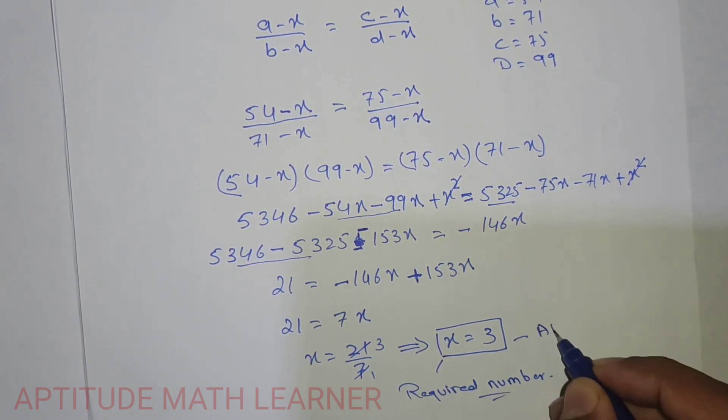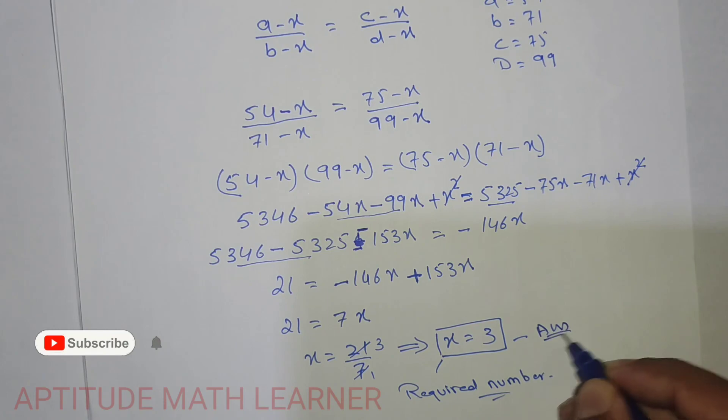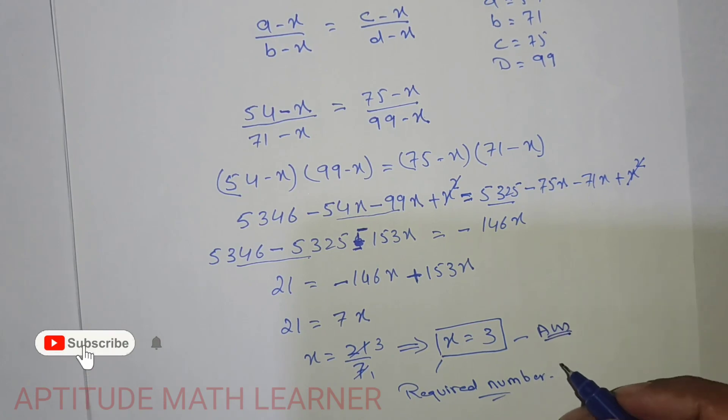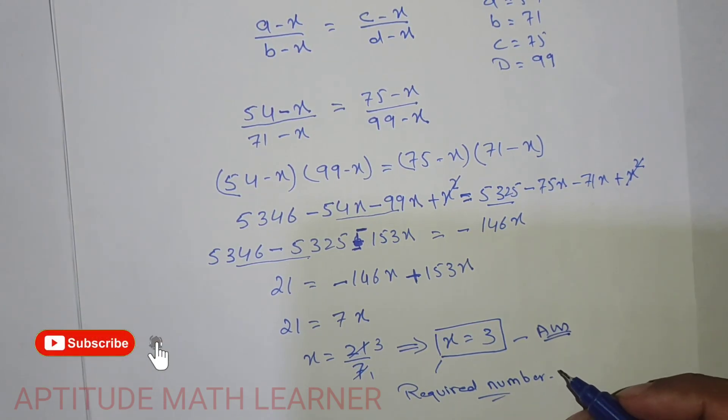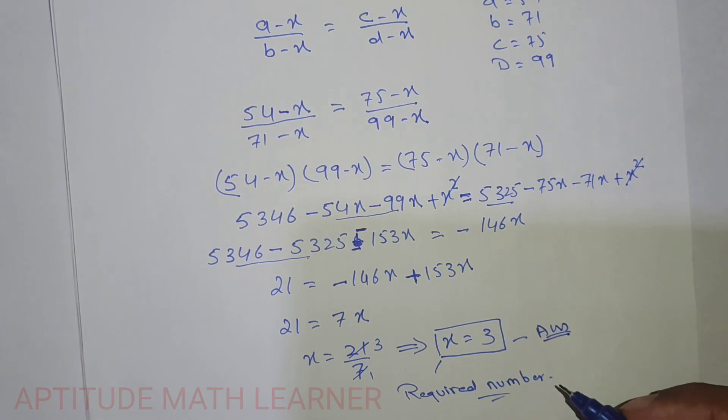So x equals 3, and that is the required number — the answer is 3. Hope you have understood the question. Please subscribe to our channel, like it, and share it. Thank you very much.